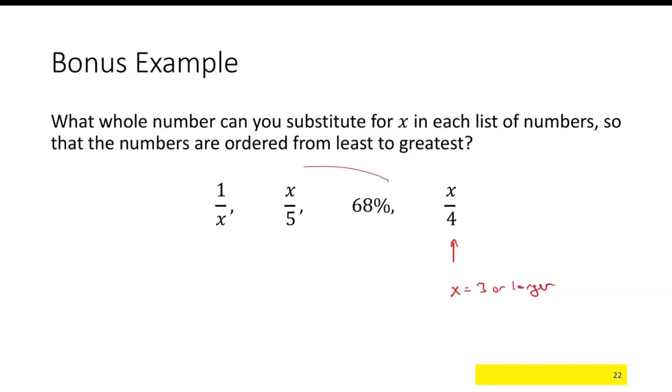Now let's consider this part right here. We need the X over 5 to be less than 68%. Well, one-fifth is 20%. That's good. Two-fifths is 40%. That's good. Three-fifths is 60%. That's good. Four-fifths is 80%. That's too high. So this part is telling me that X is 3 or less.